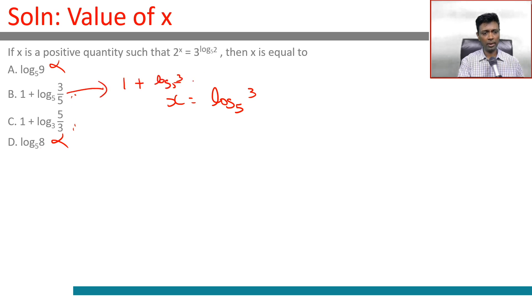This choice will become 1 plus log of x by y is log x minus log y, log_5(3) minus log_5(5). This goes away, leaving log_5(3), which is what it should be. Choice B.